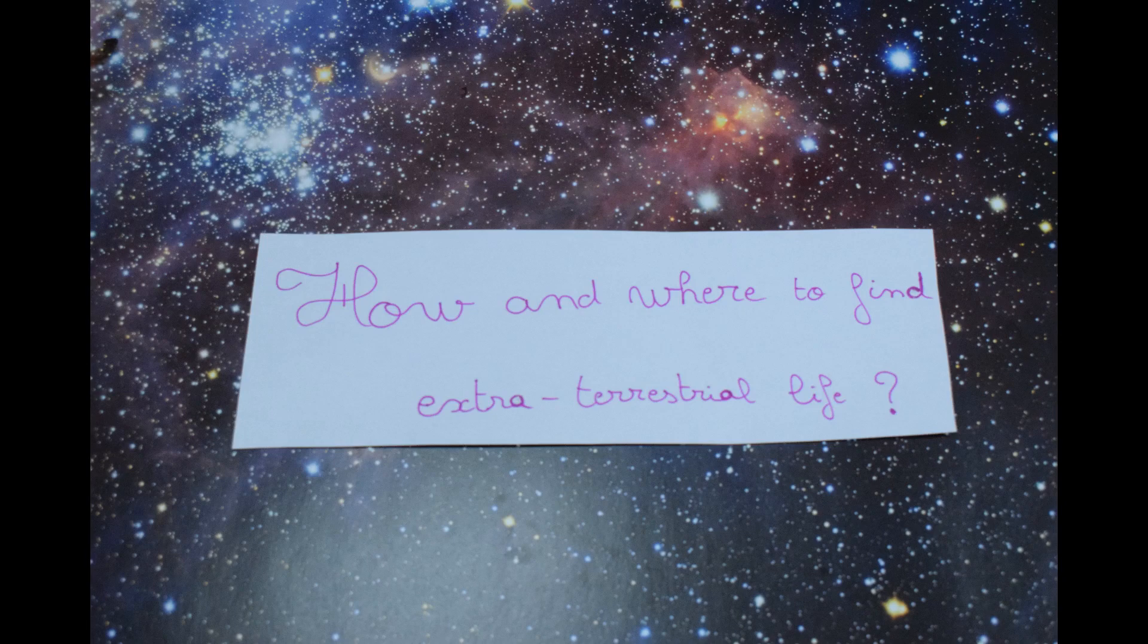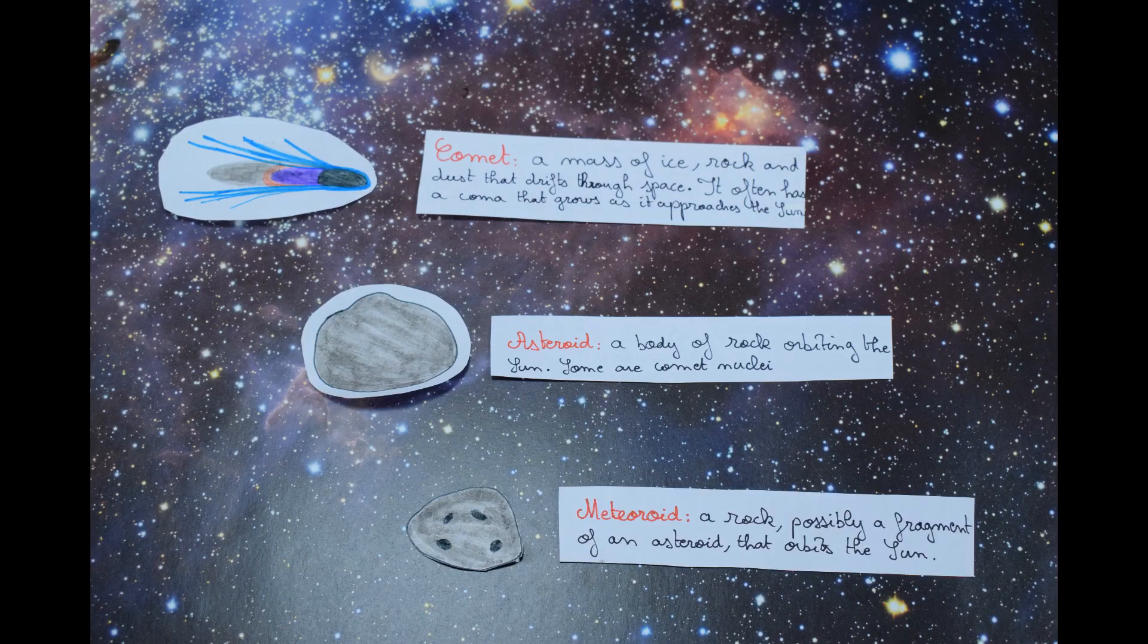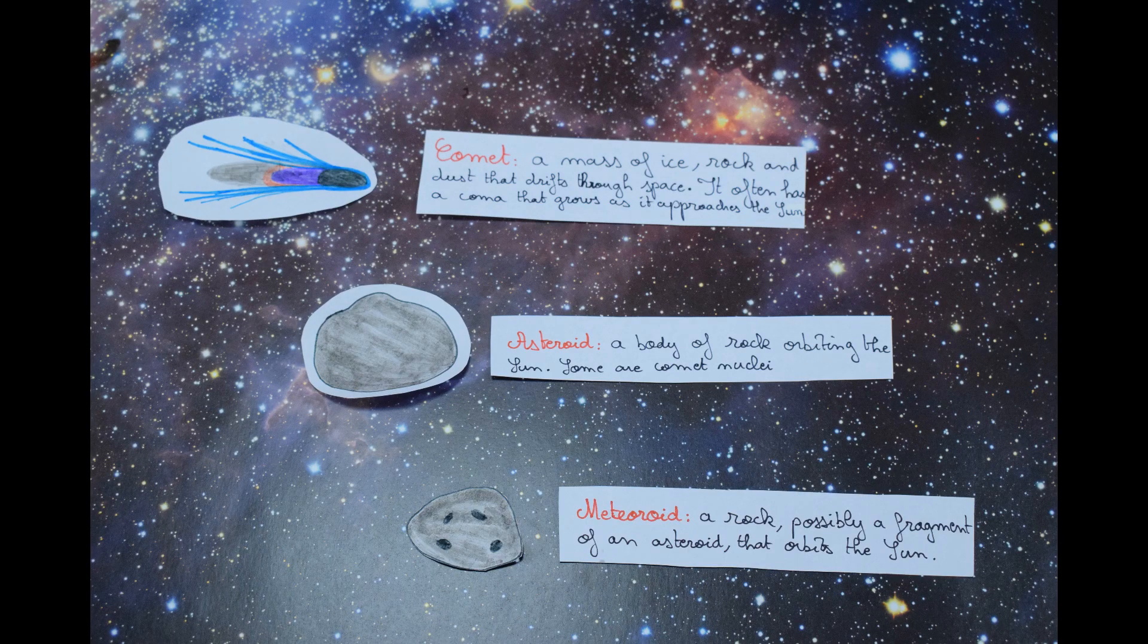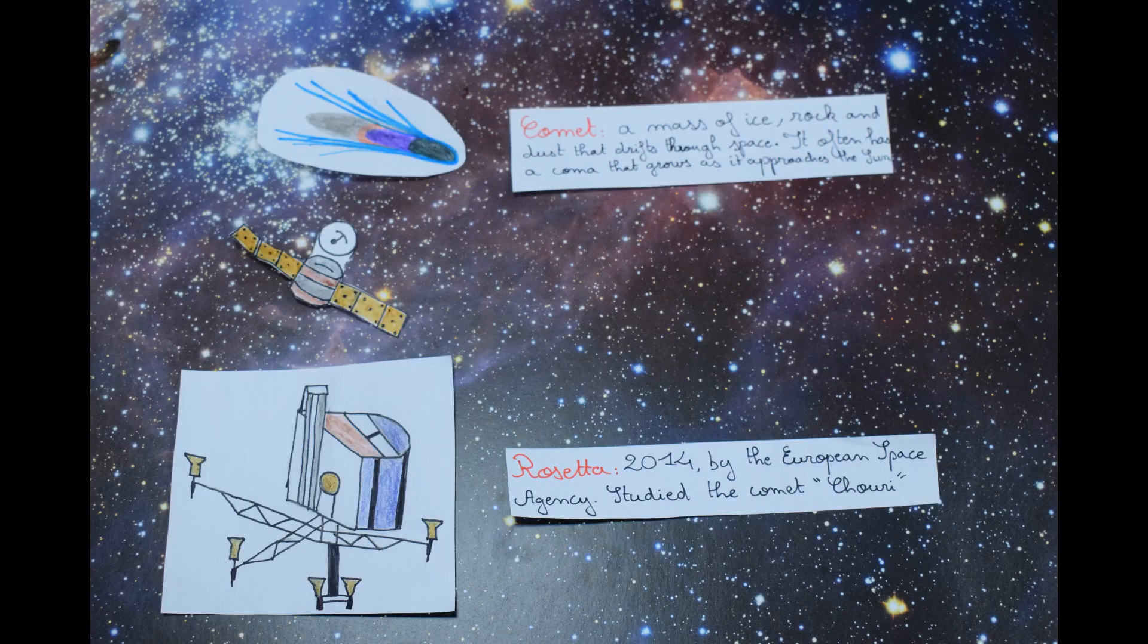How and where to find extraterrestrial life? One of the main hypotheses would be small solar system bodies in space like meteorites, asteroids, or comets. Missions to such objects were sent to search for traces of life, like Rosetta in 2014.